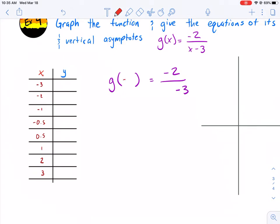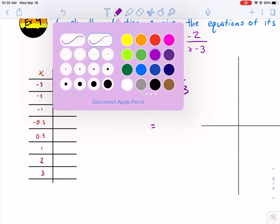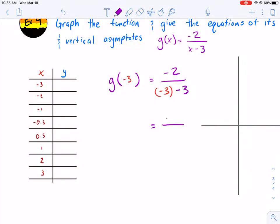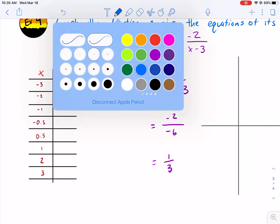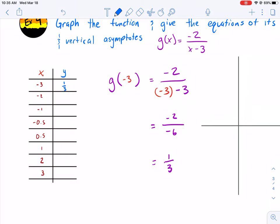So I'm going to put g of negative 3. And what values do I get when you input negative 3? So let me put an equal sign right here. This would be my second work area. And I get negative 2 over negative 3 minus 3 is negative 6. Let me simplify it further. I get positive 1 third. So I get positive 1 third. I'm going to do that in blue. 1 third.